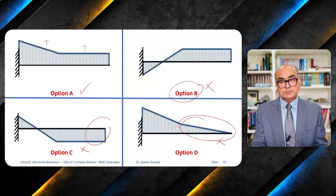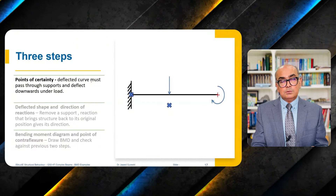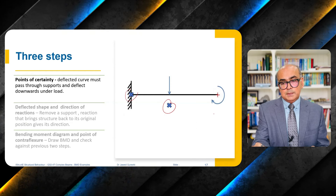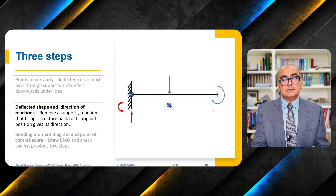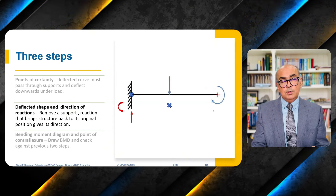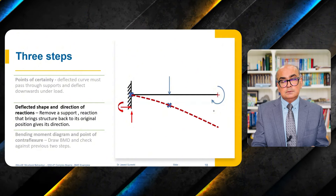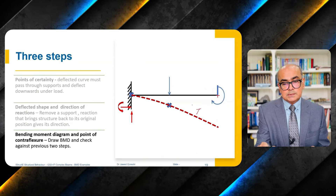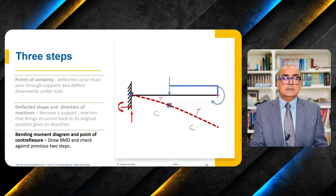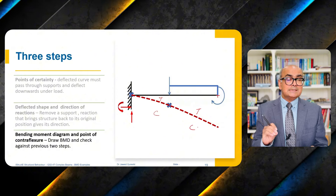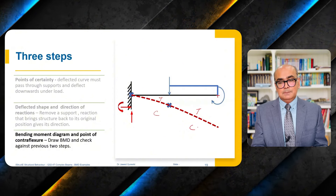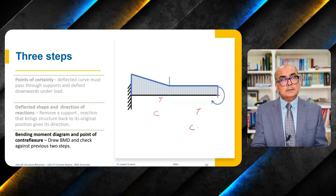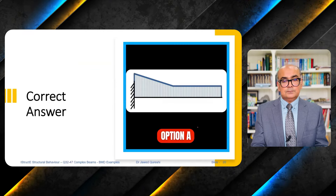Applying the three steps: locate points of certainty, draw the deflected shape. We have an upward reaction and an anticlockwise resisting moment. The deflected shape shows tension at top throughout. The moment remains uniform until the point load is applied, and the point load adds to this moment because the direction is the same — both clockwise causing hogging. The bending moment diagram is drawn, hatched, and the correct answer is confirmed as option A.